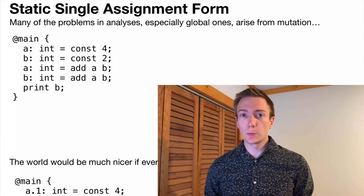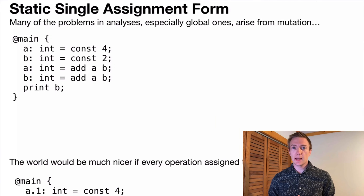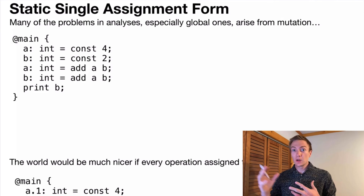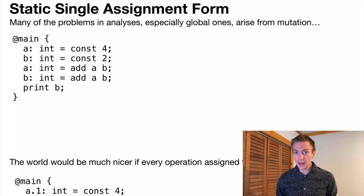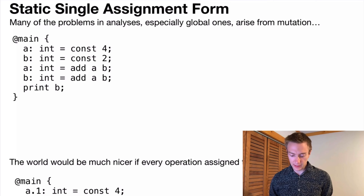This video is about SSA, or Static Single Assignment Form. SSA is kind of a philosophy, in addition to a shift in representation of programs, that makes a lot of analyses a lot easier. In particular, when implementing some optimizations for Brill already, a lot of the problems we have to deal with when analyzing programs have to do with variable name conflicts. Everything would be a lot easier if we didn't have to worry about the fact that we are constantly reassigning to variables, which is a fact of life in real imperative programs, but it's just plain annoying.